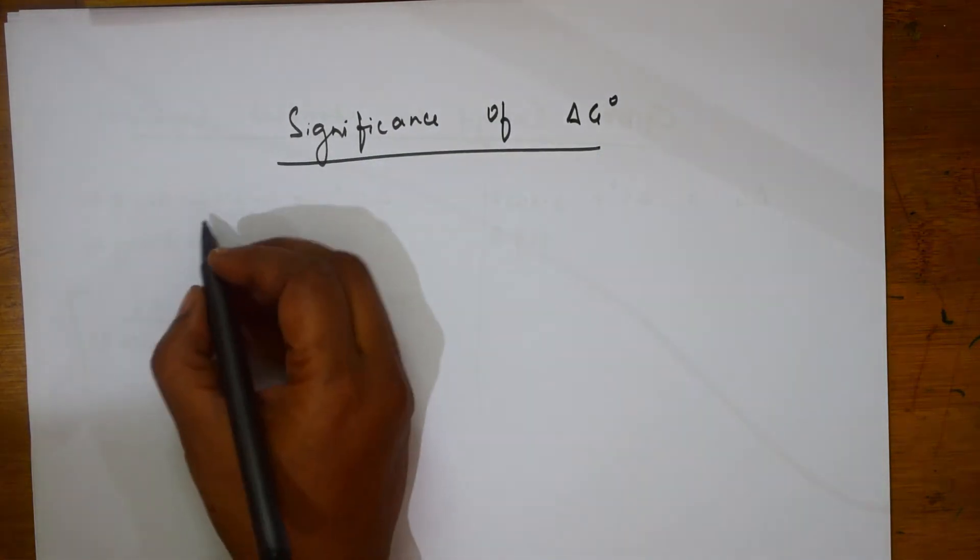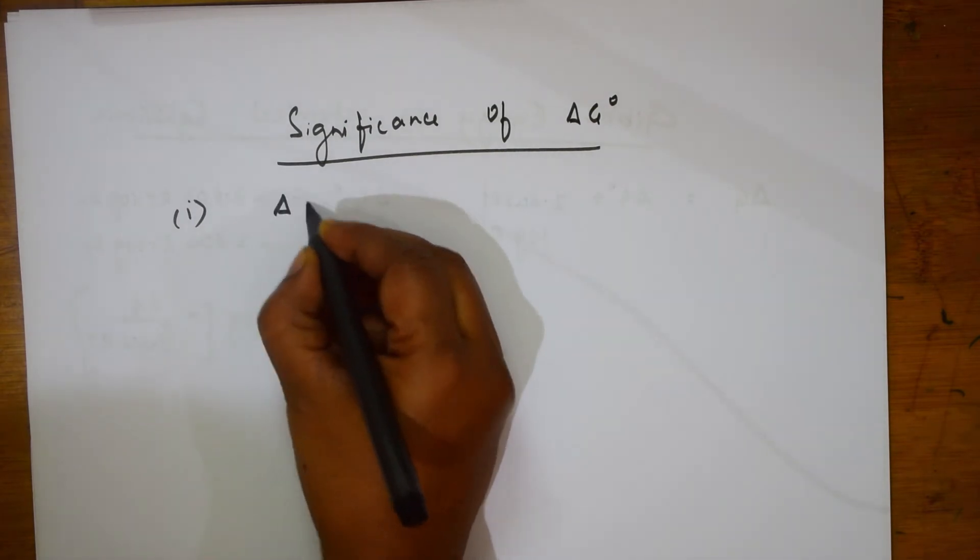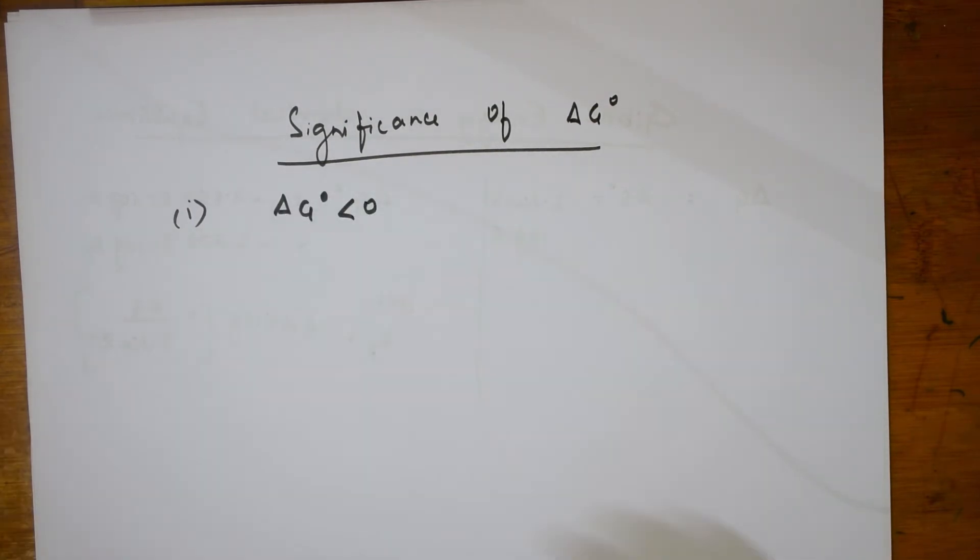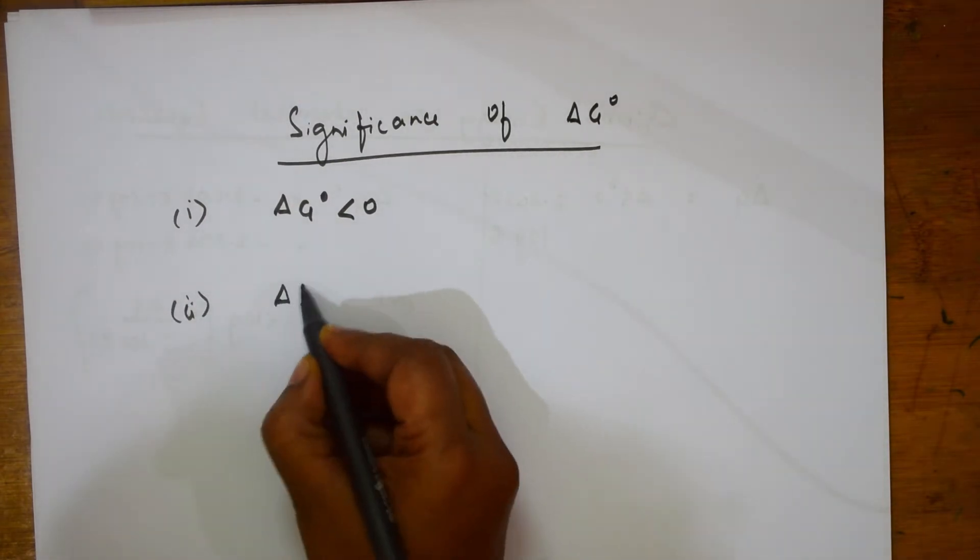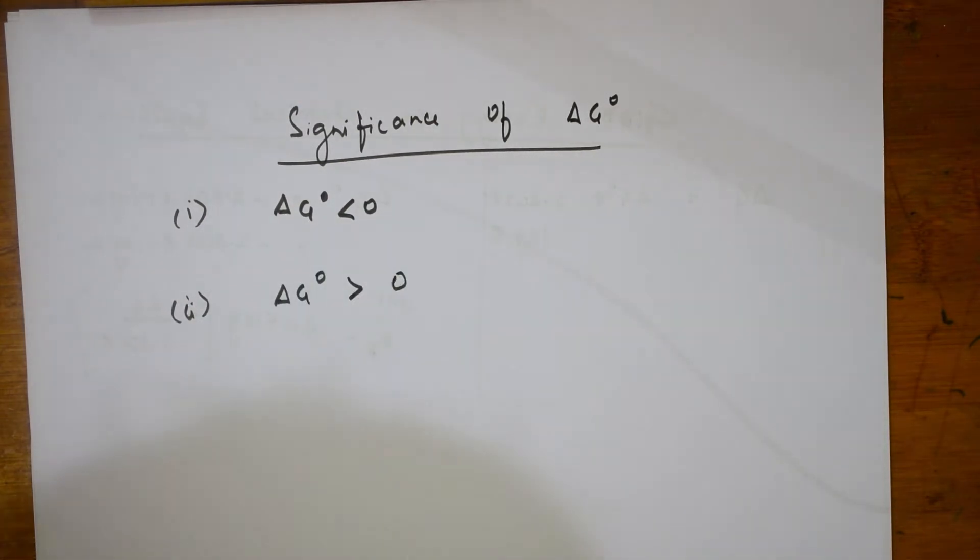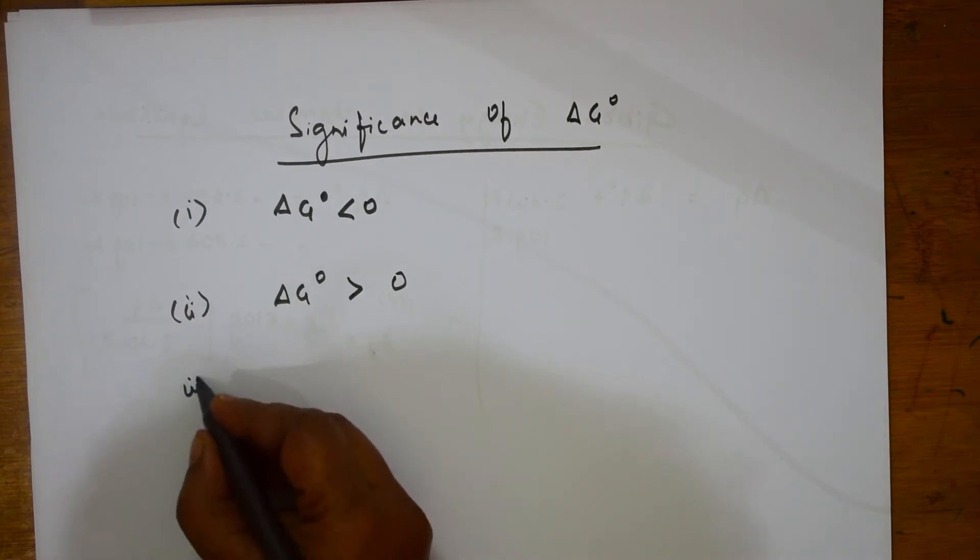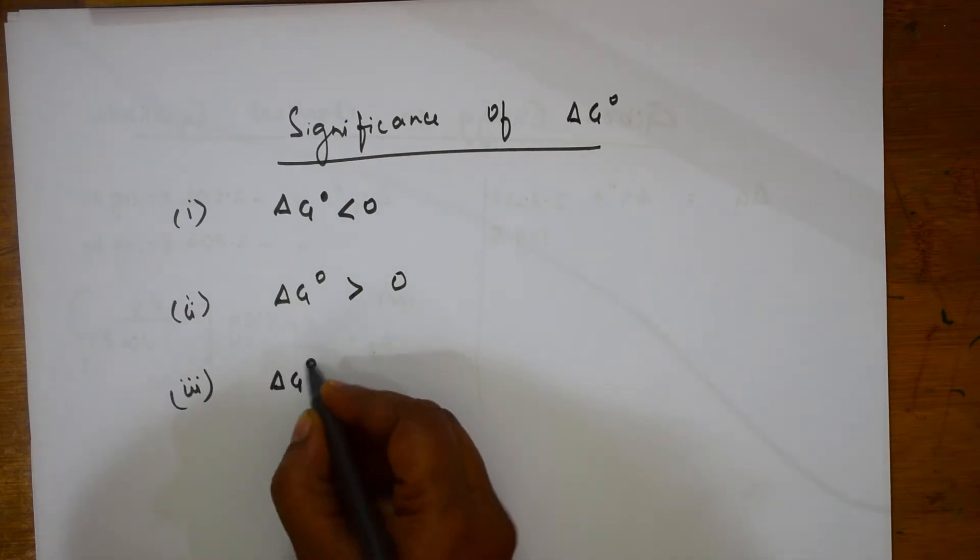Now, let us write condition 1: if Delta G naught is less than 0. Second condition: if Delta G naught is greater than 0. Third condition: if Delta G naught is equal to 0.